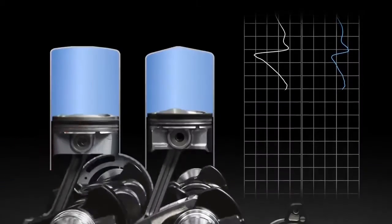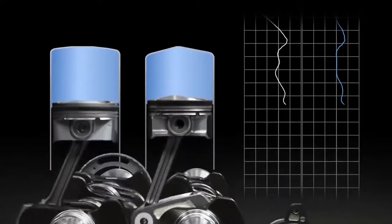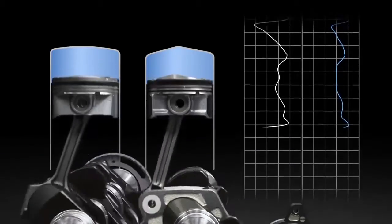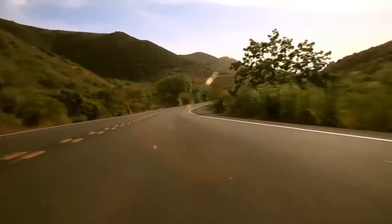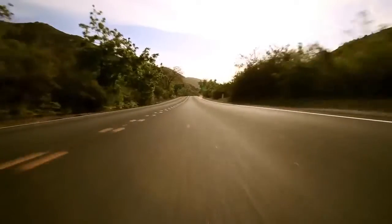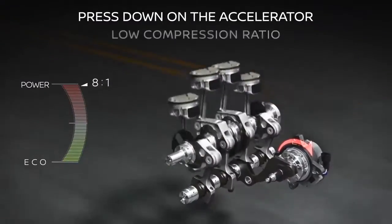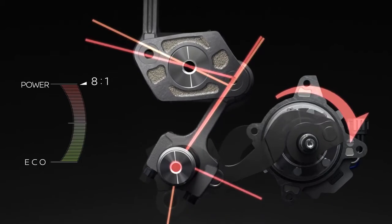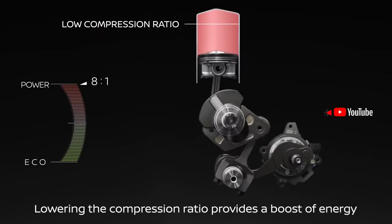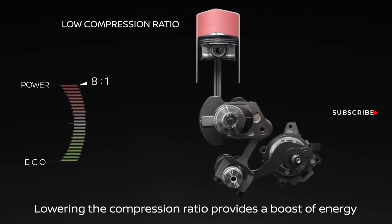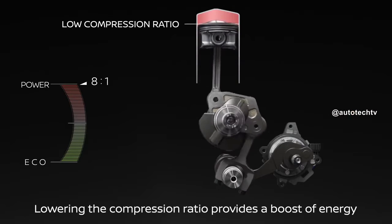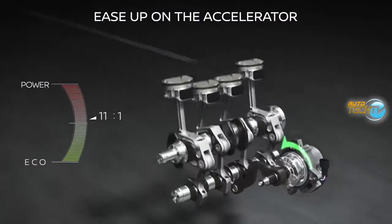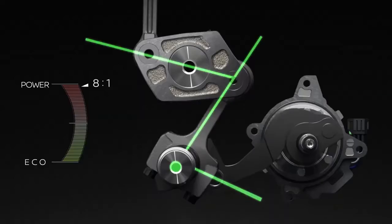And if the pressure gets too high it detonates. So the engineers at Infiniti said: let's make it so that when they press on the accelerator and introduce a lot of mixture, they get a lower compression ratio to avoid detonation and provide a boost of energy. And when I let off the gas and have low mixture in the cylinder, let's raise the compression as much as we can, which causes the combustion chamber to contract, bringing greater efficiency.